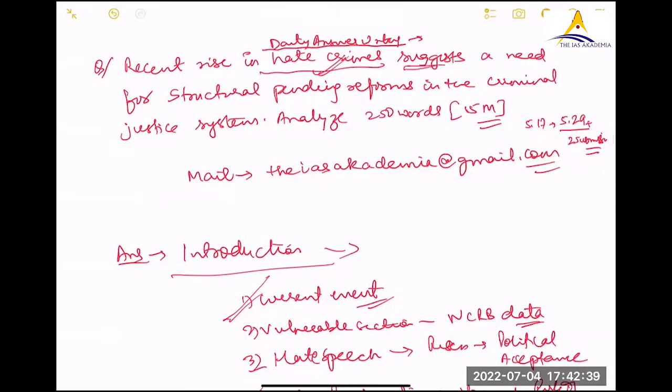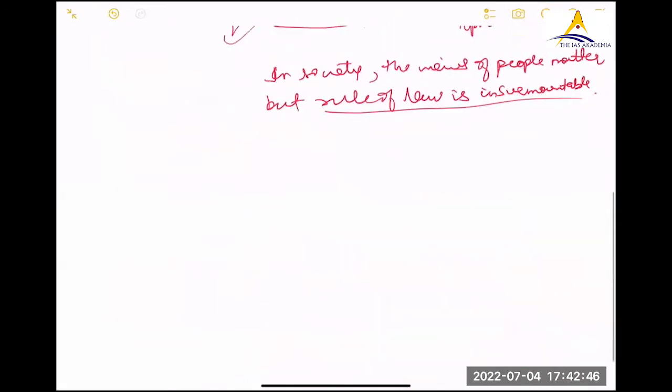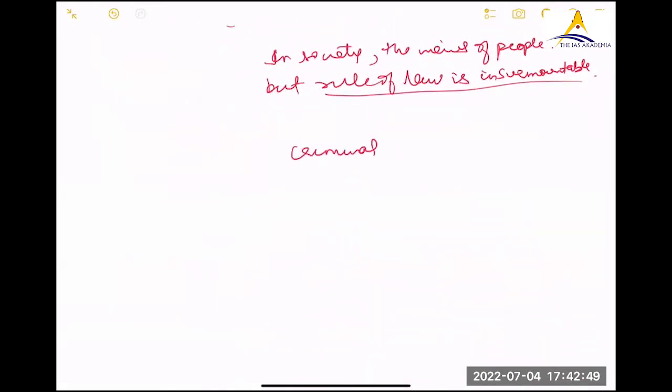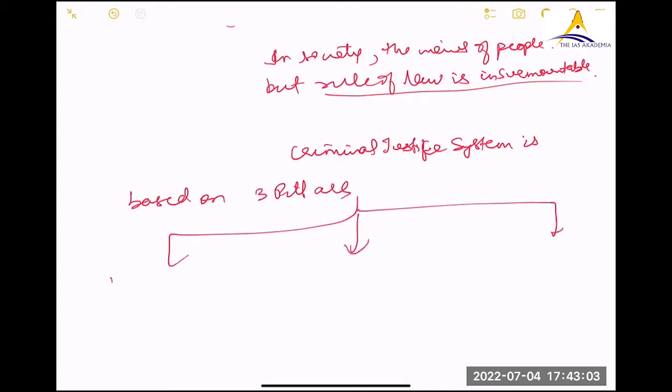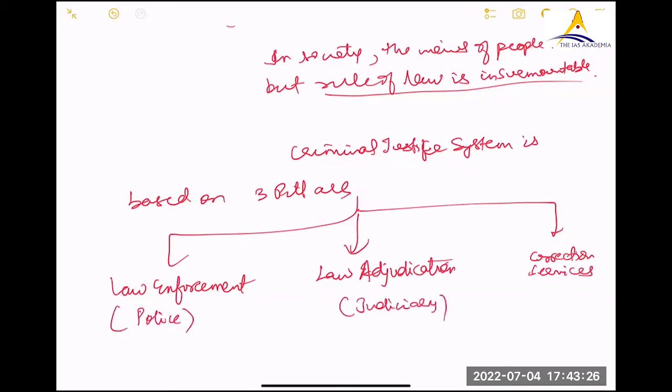And this suggests a need for structural pending reform. So there has to be structural reforms and they have to be pending. So, criminal justice system is based on how many pillars? Three pillars. What are those three pillars you draw like that? Law enforcement agency. Law enforcement, law adjudication. And prison or correctional services. In bracket, you can write for law enforcement. This is police. Law adjudication is judiciary. And this is prison.